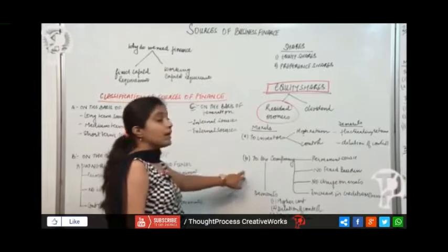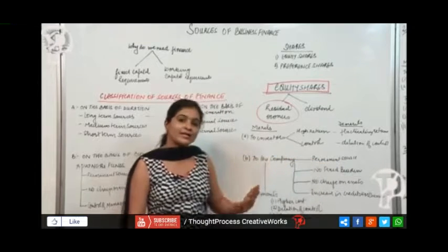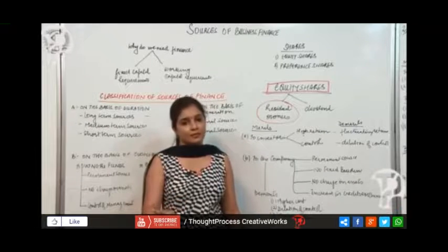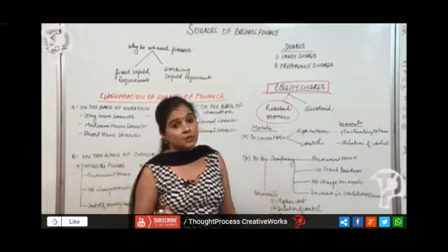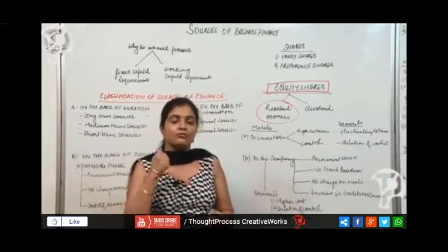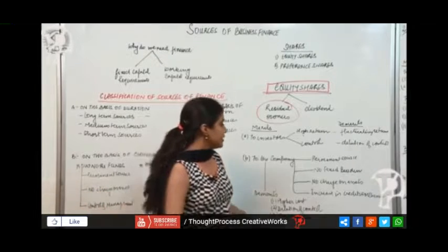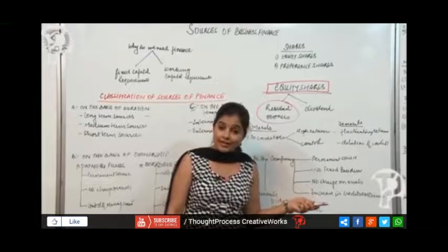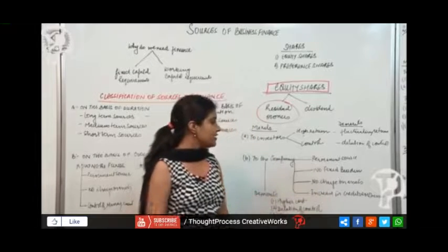Then what are the merits for the company? Equity share capital is a permanent source of finance. Why is it a permanent source? Because the amount remains permanently invested in the company. It is repayable to the shareholders only at the time of liquidation. Secondly, no fixed burden. The company has no burden on its head to give dividend every year. If there's profit, they'll give, if not, they won't. Then no charge on the assets. You do not have to mortgage your assets for issuing equity share capital.